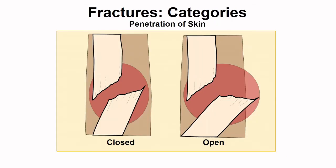The final category is regarding the penetration of skin, which is helpful when determining treatment. Open fractures penetrate through the skin and would be visible, whereas with a closed fracture you wouldn't necessarily know unless you knew your anatomy and could palpate the bone properly, as the break would be internal.